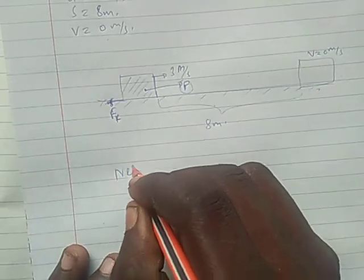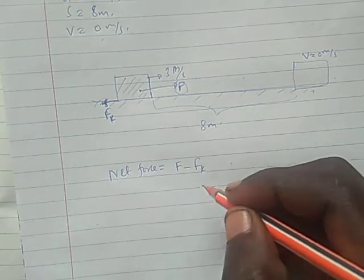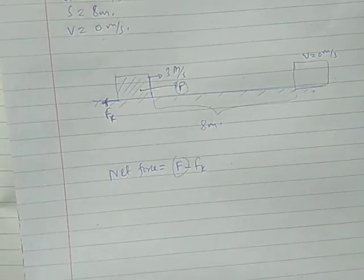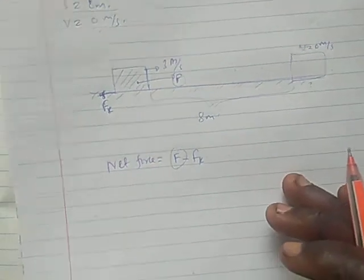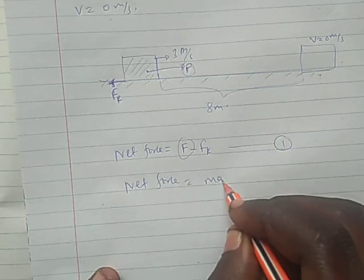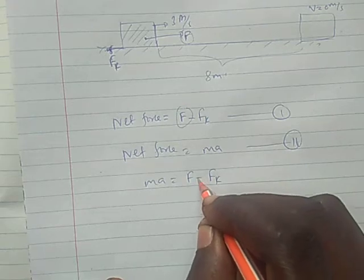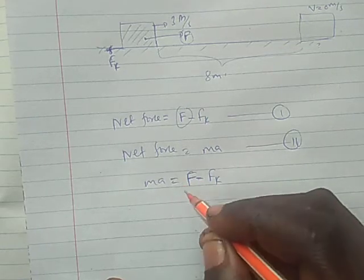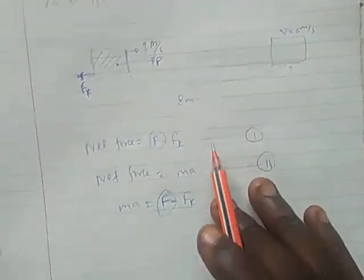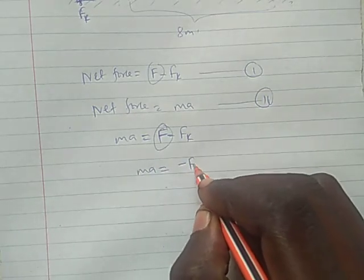So you need to understand one thing about net force. Now in this case the force applied it was just applied once. So finally net force, this is equation one, is equal to mass times acceleration. So mass times acceleration will be equal to F minus FK. Kwa sababu kwenye hii case kitu kiripewa tu velocity, that means kuliko no external force ina endeleya kukivuta. So this force would be equal to zero. Mass times acceleration would be equal to negative FK.